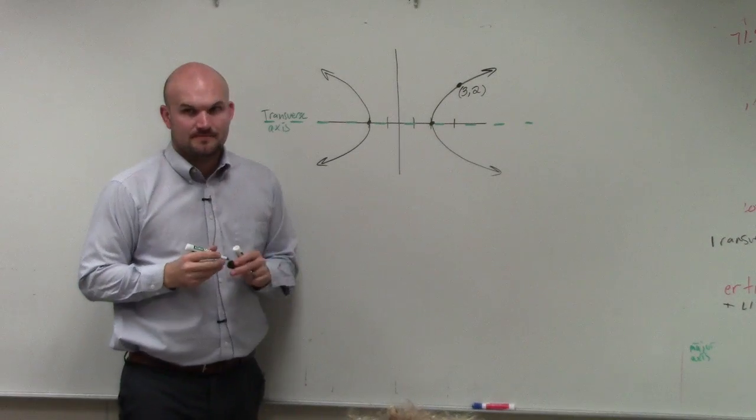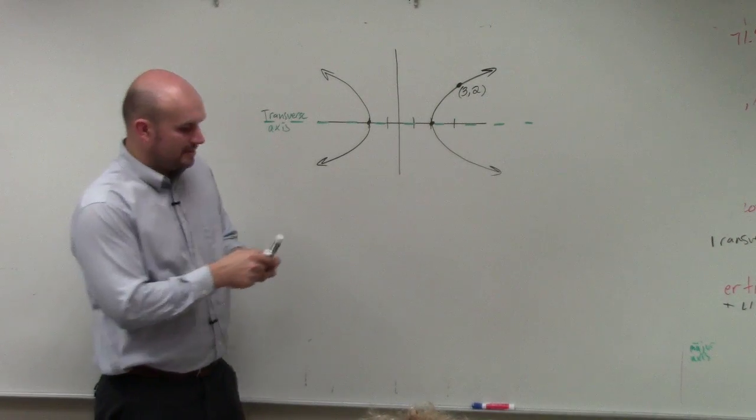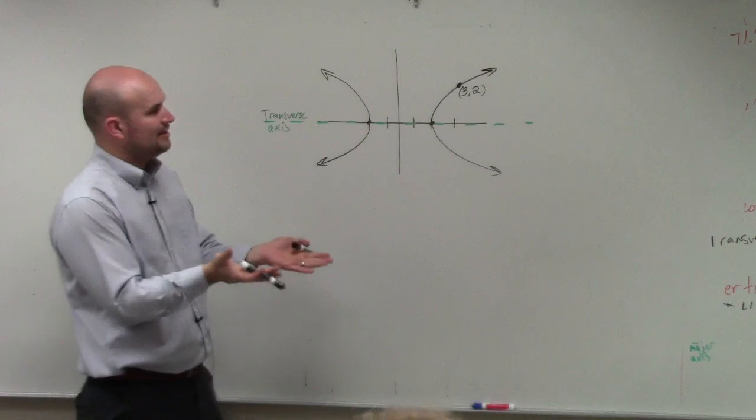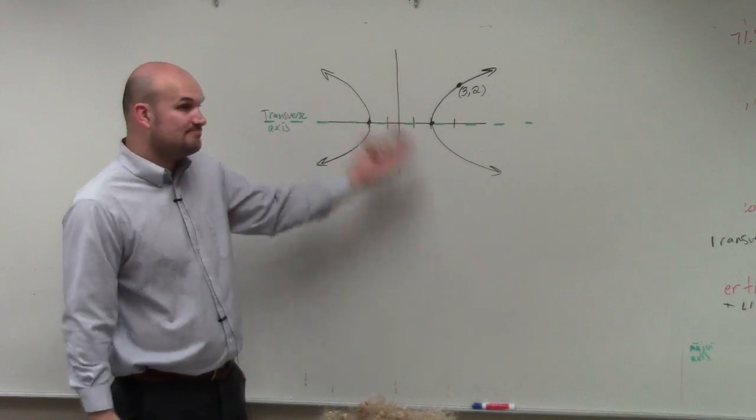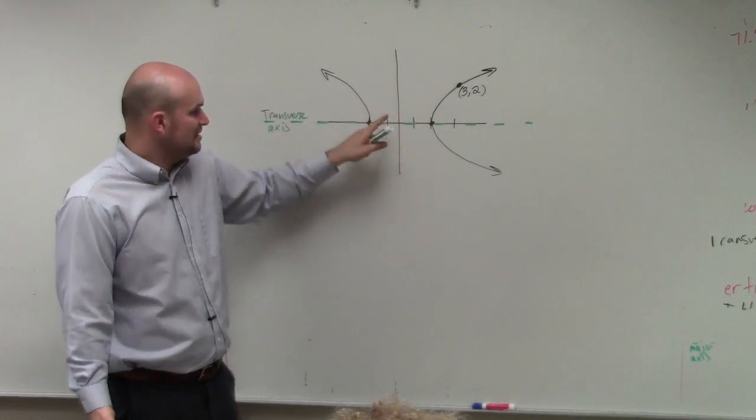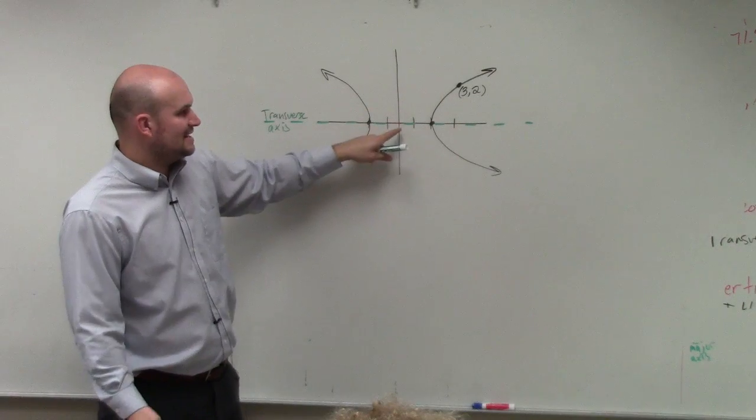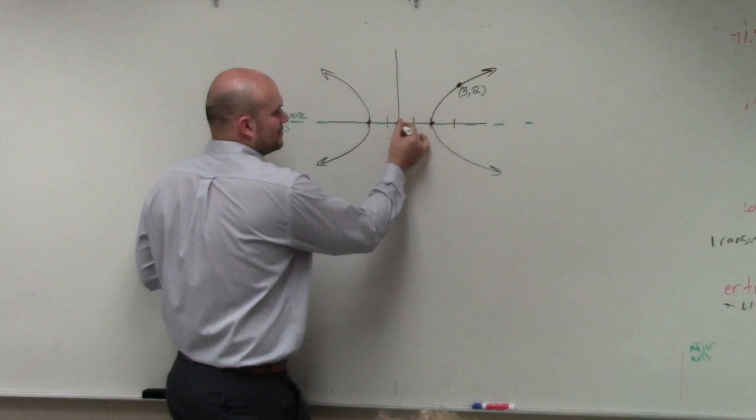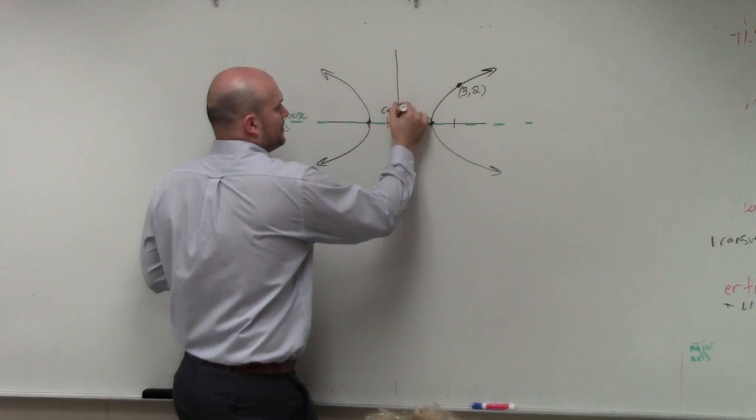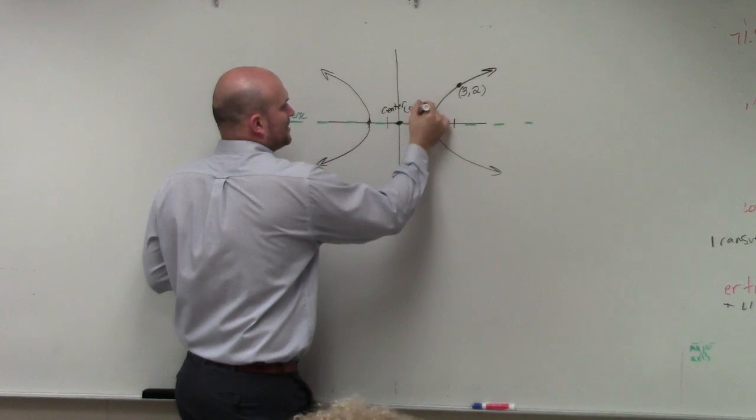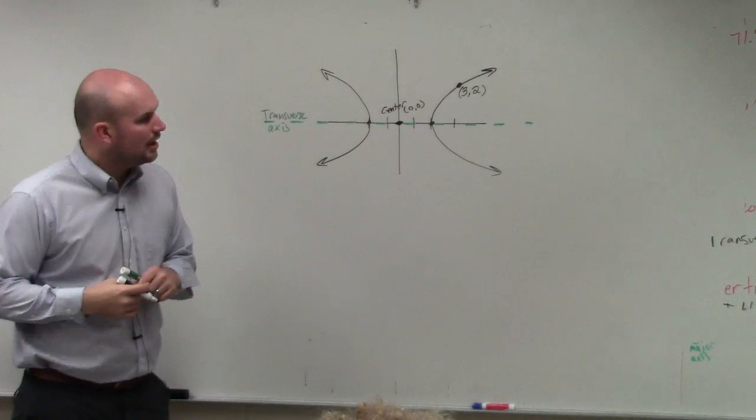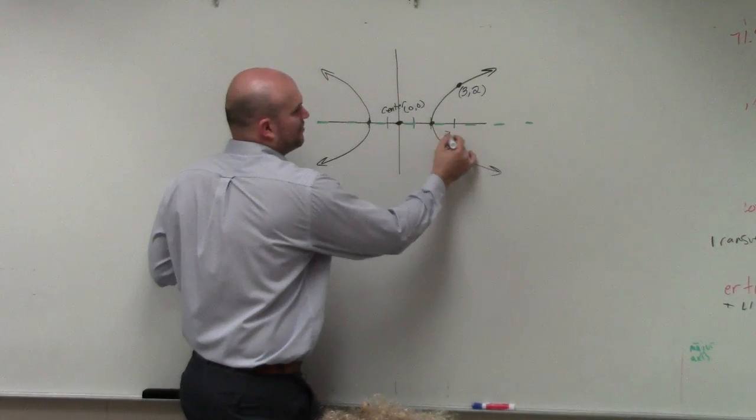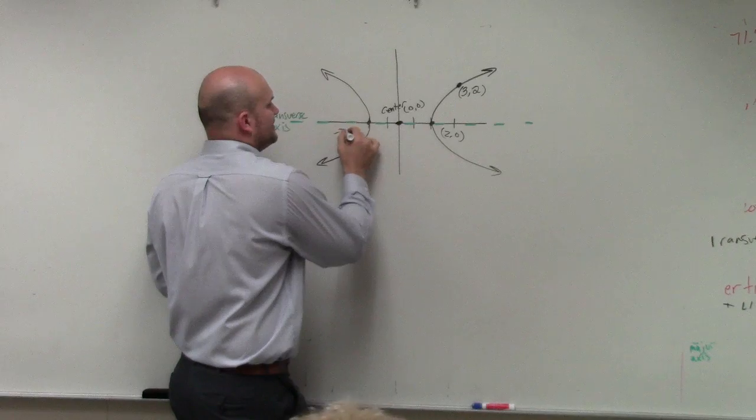Does that make sense? Now, we also know that our center is in between our two vertices. So it's pretty obvious to see that if these are two vertices, then my center is going to be at the origin, which is at 0, 0. All right? Our two vertices have the coordinate points 2, 0 and negative 2, 0.